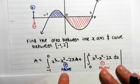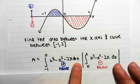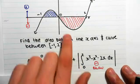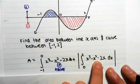Because it's above, it's positive, so we can just evaluate the integral, but then we have to add on the absolute value of the integral from 0 to 2 of the same function, x cubed minus x squared minus 2x dx.